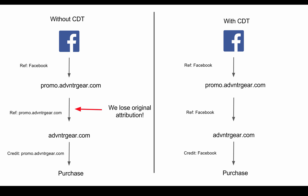Say we're buying Facebook ads for our Shopify store. Over here on the left, without cross-domain tracking set up, somebody clicks on our Facebook ad and the referral information passed through — because we've probably tagged our links or used UTM codes — is going to register as Facebook. So Facebook's going to refer traffic to our landing page on this promo domain, which in our case is built in WordPress, but it could be any platform. So first things first, Facebook sends traffic, and the referral is Facebook to promo.adventuregear.com.